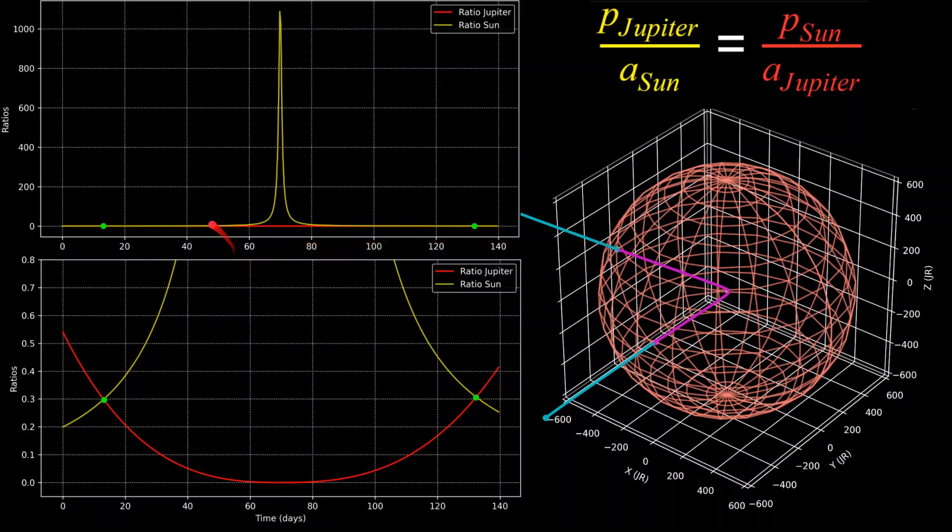The reason why this ratio Sun has this massive large spike right in the middle is because the perturbation acceleration due to Jupiter's gravity, as seen in this equation here, is over a thousand times more massive than the acceleration due to the Sun, since Voyager 2 is so much closer to Jupiter at that time, and Jupiter is a very massive body.